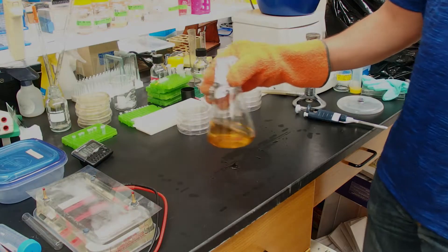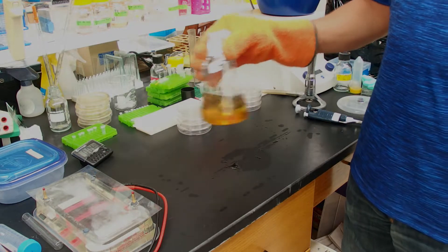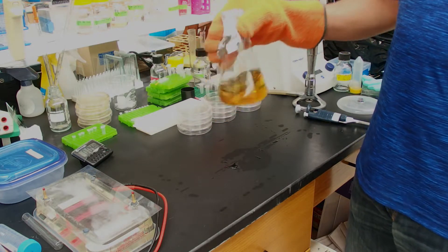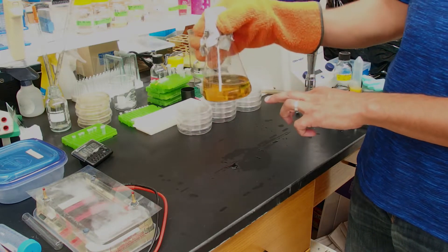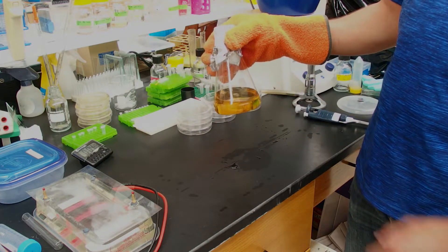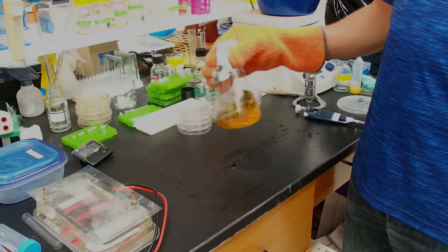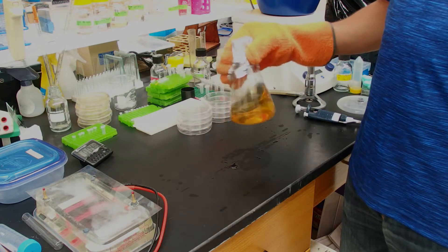After autoclaving, give your flask a good swirl like this. While it all looks homogeneous, there's often going to be a layer of agar on the bottom. And we want to get the agar mixed very well with the rest of the media.